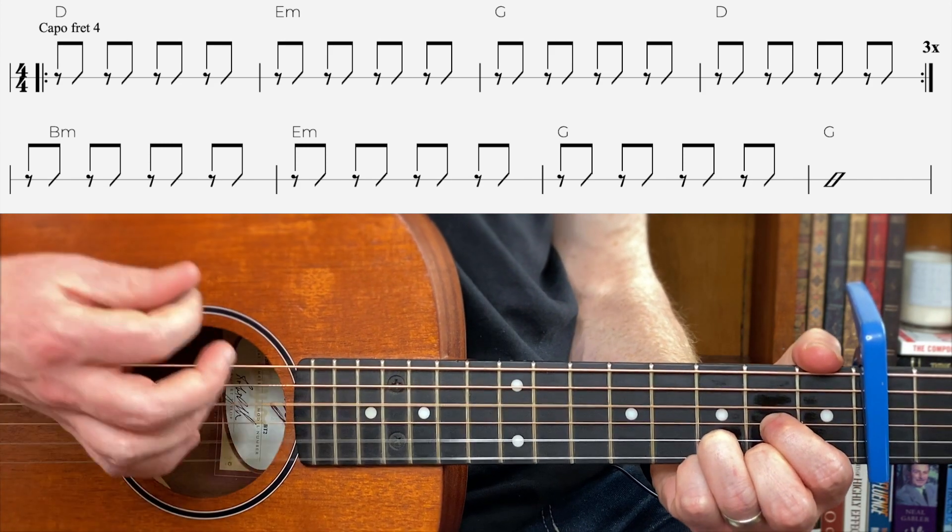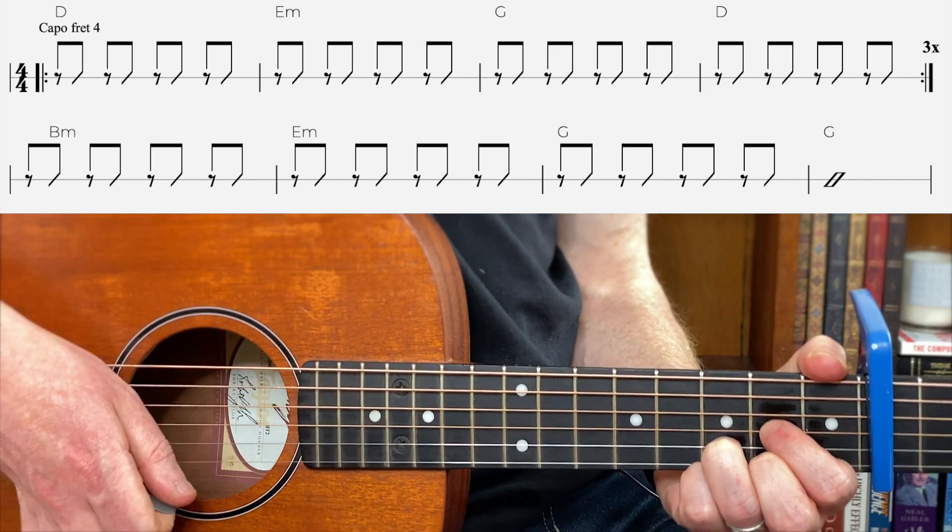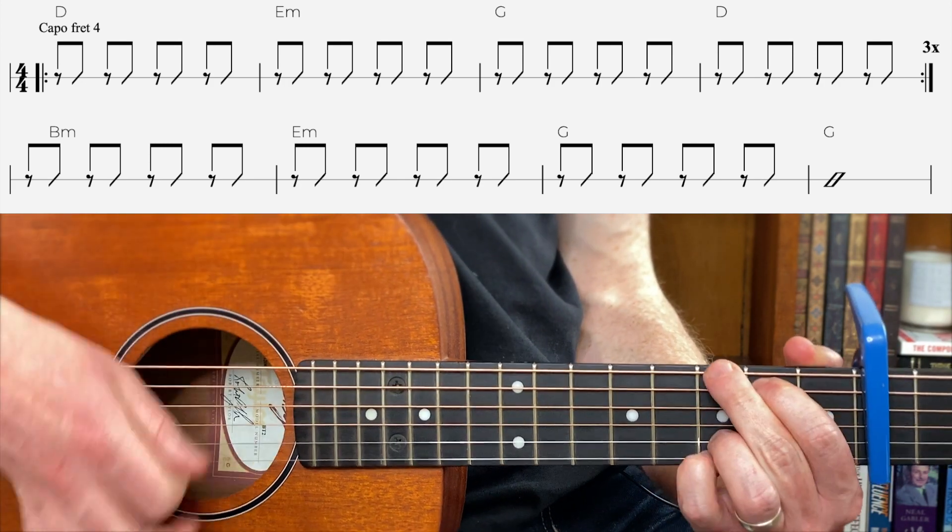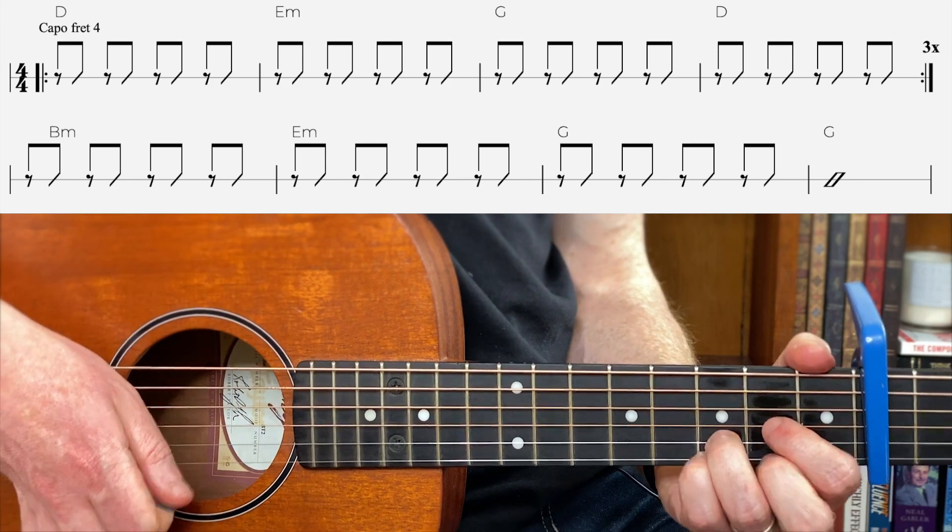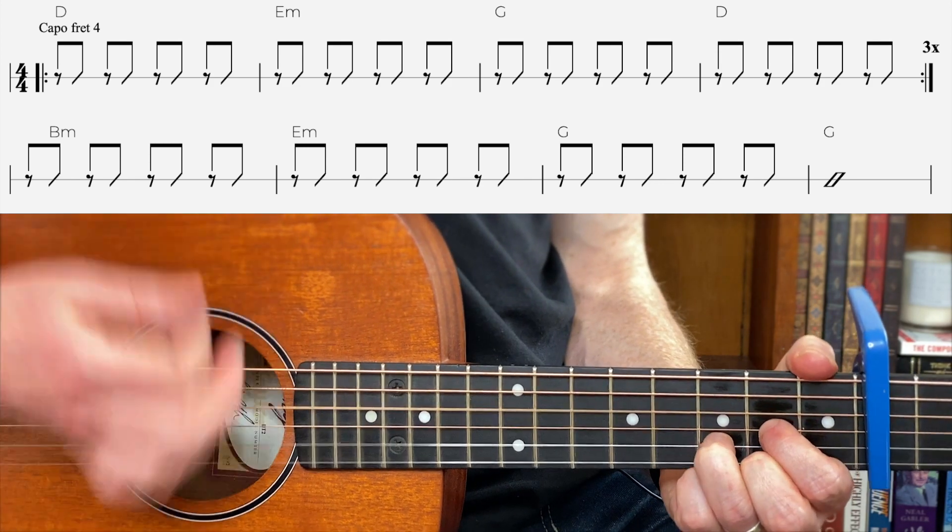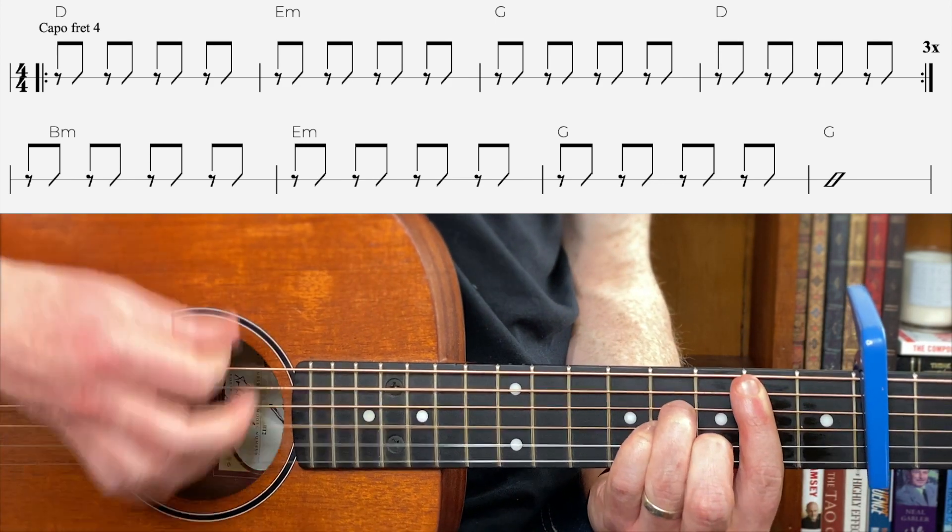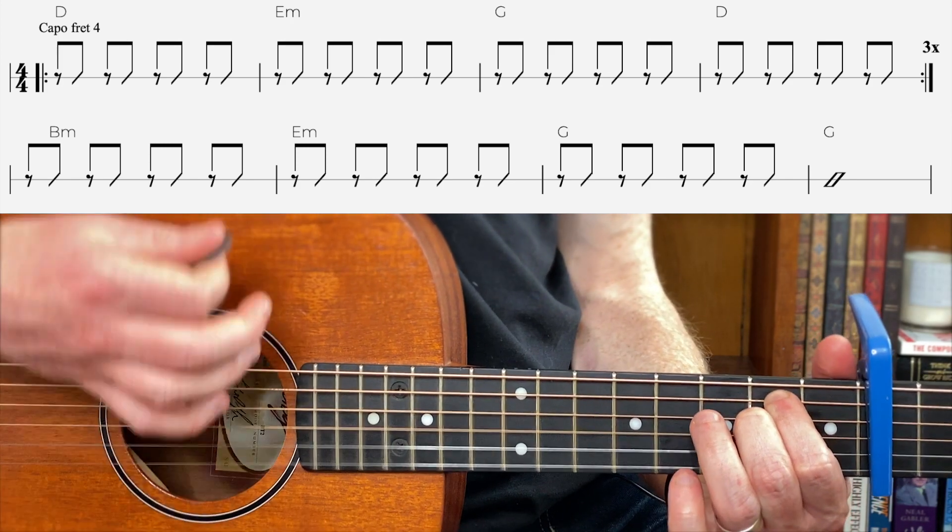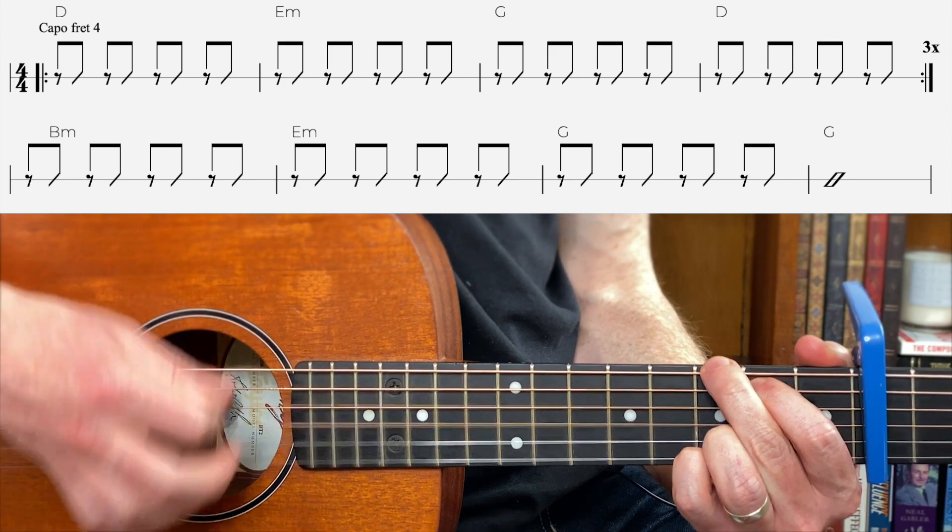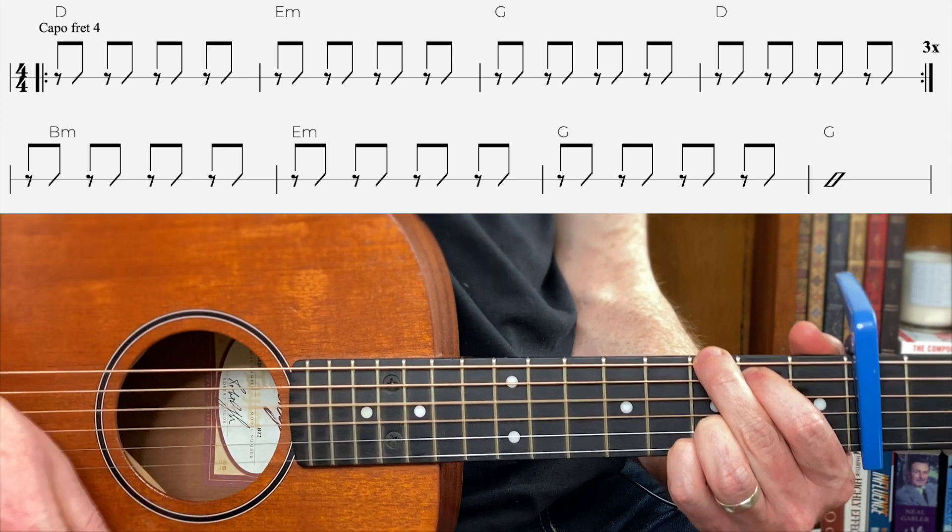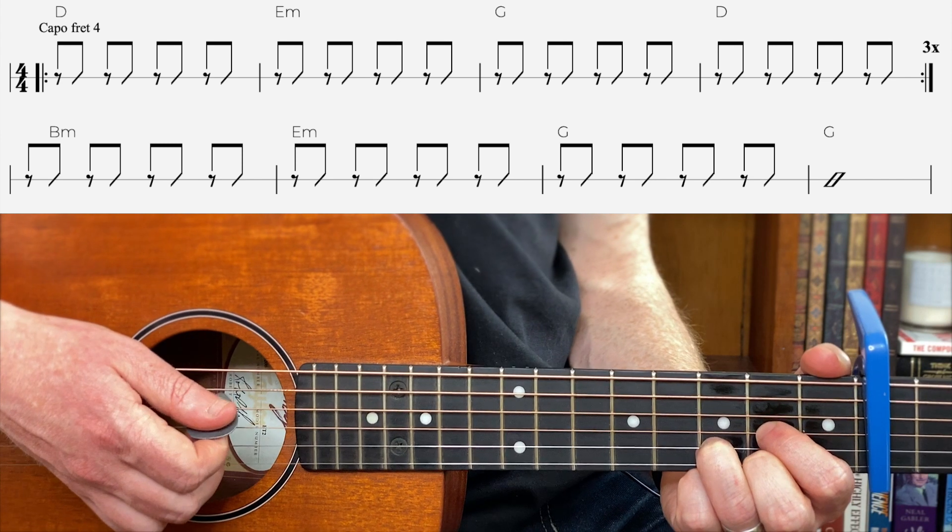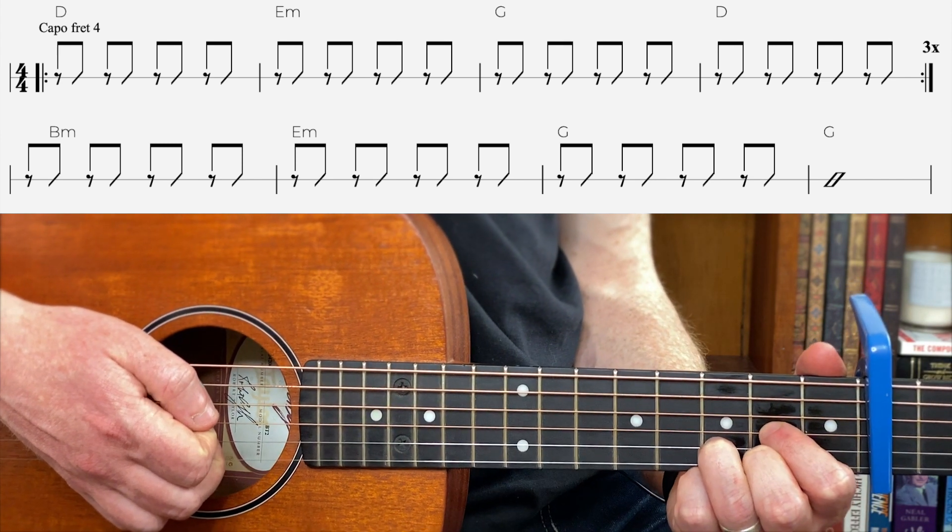Then D. Last time. Top line. D. E minor. G. Last D. Now, here comes the B minor. G. Now, what's the last two? Two, three.